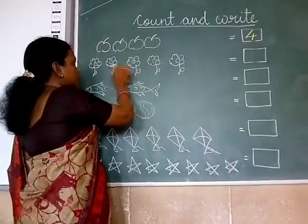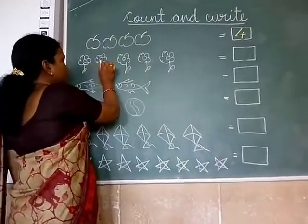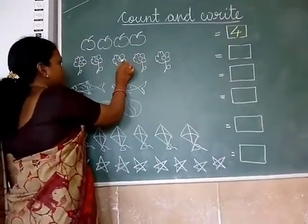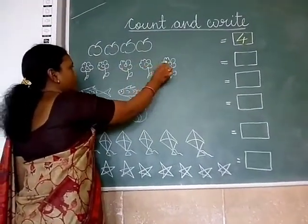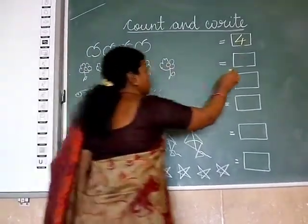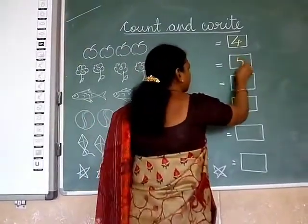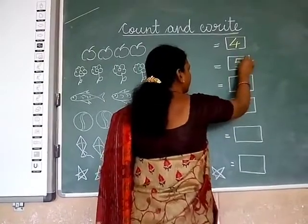How many flowers? 1, 2, 3, 4, 5. Write here 5.